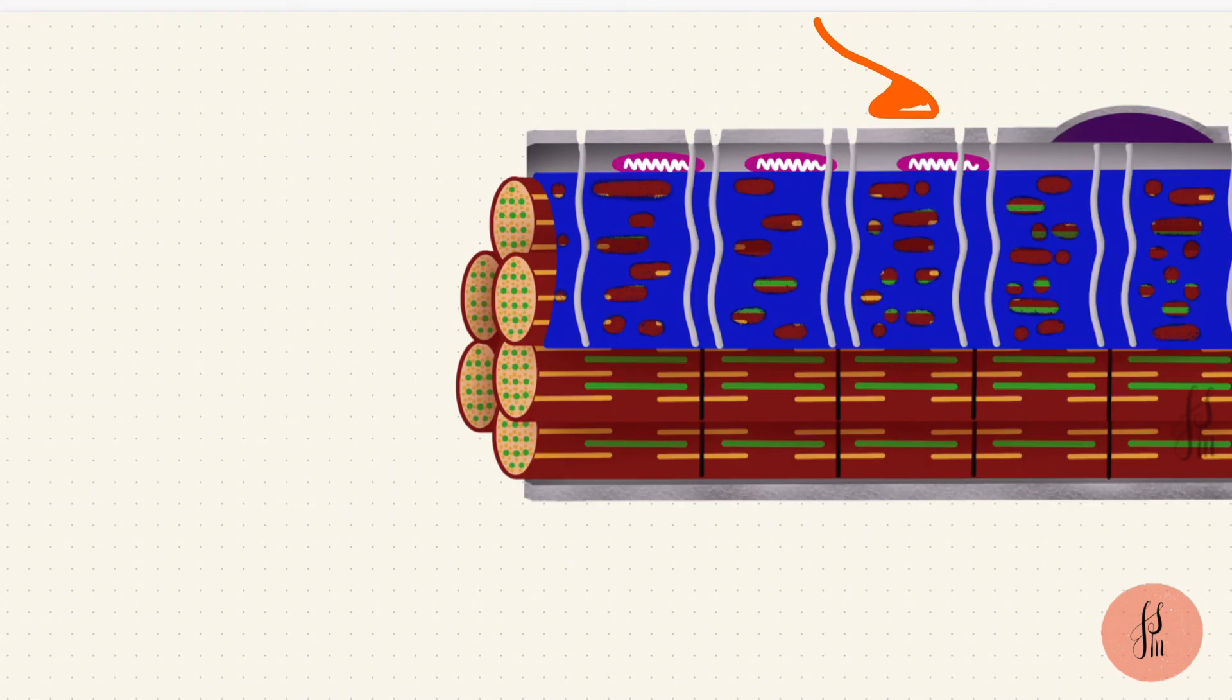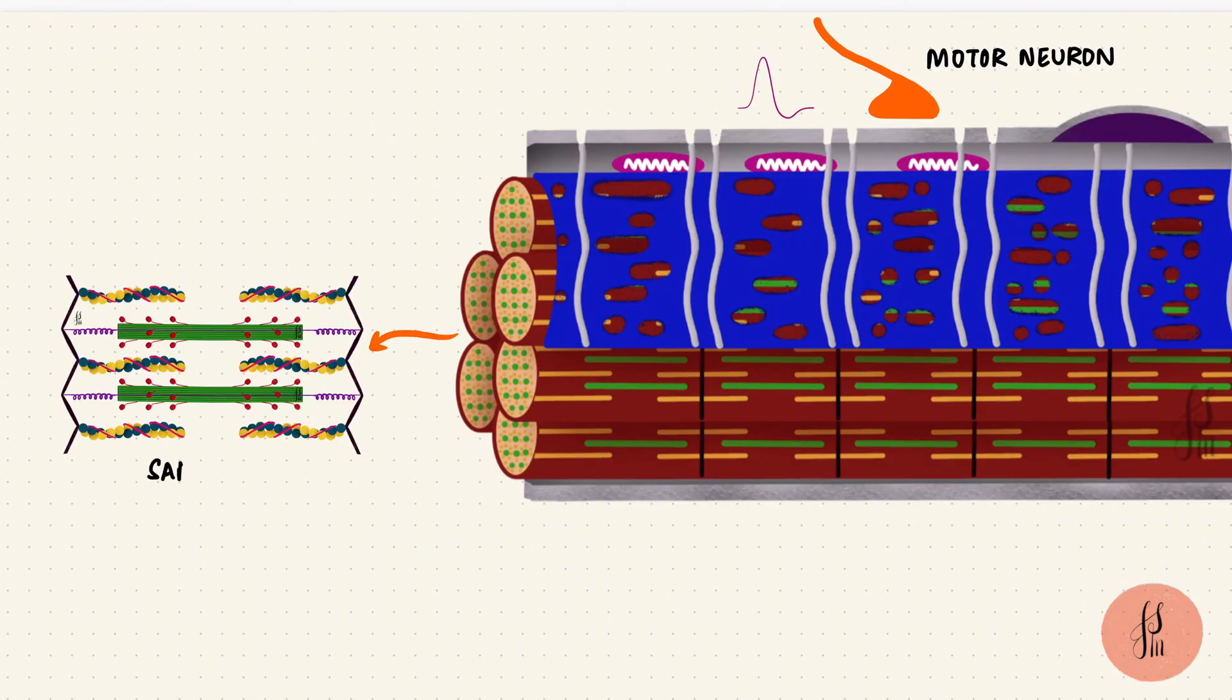Each muscle fiber is associated with a synaptic terminal from a motor neuron. The action potential that starts on the surface of the muscle membrane is ultimately going to cause this sarcomere to shorten and result in a muscle contraction using the entire system.